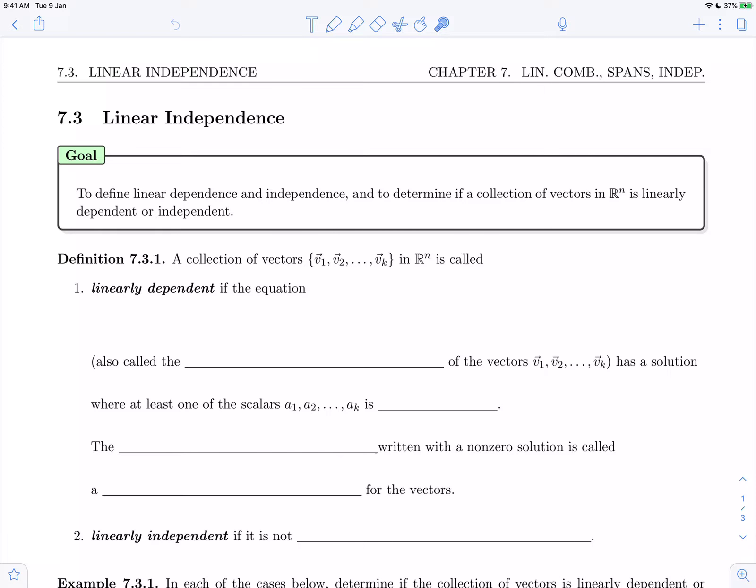Thanks for joining me as we begin section 7.3, Linear Independence. The goal of this section is to define linear dependence and independence, and to determine if a collection of vectors in Rn is linearly dependent or independent.